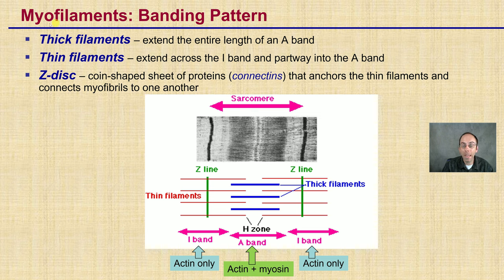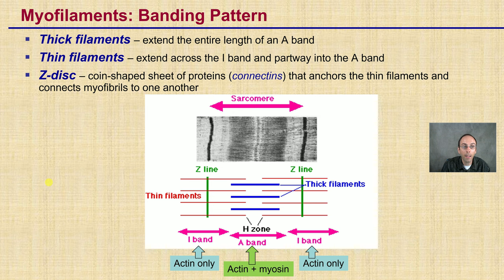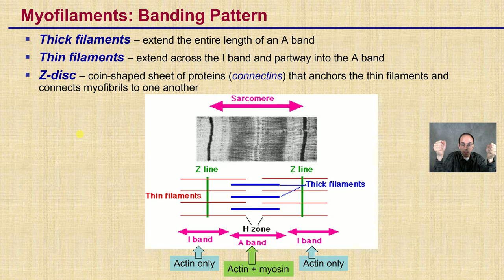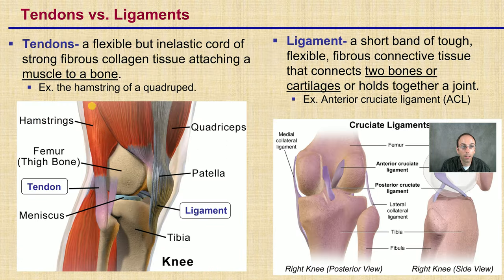In these myofibrils and the banding pattern we see, thick filaments extend the entire length of the A-band, whereas thin filaments extend across the I-band and partway into the A-band region. The Z-disc, or coin-shaped sheets of proteins, basically act as connections that anchor the thin filaments and connect the myofibrils to one another. You need an anchoring point because you're going to be pulling things together, and that anchoring point is what allows contraction.